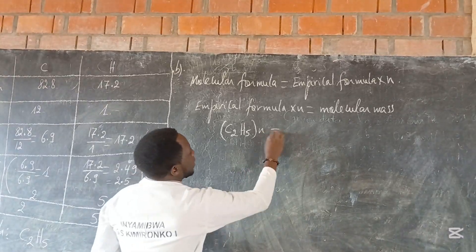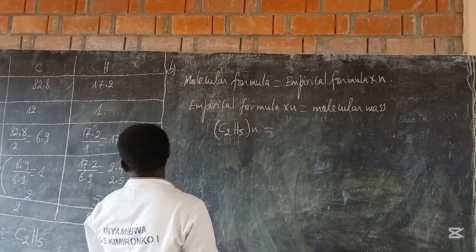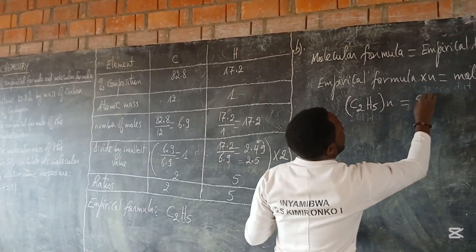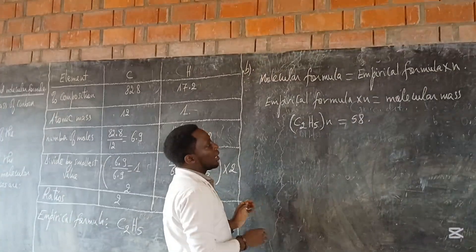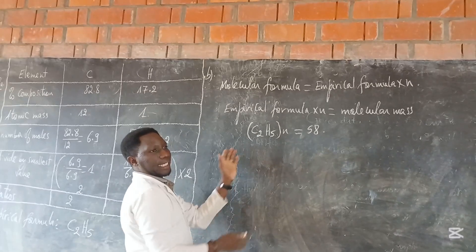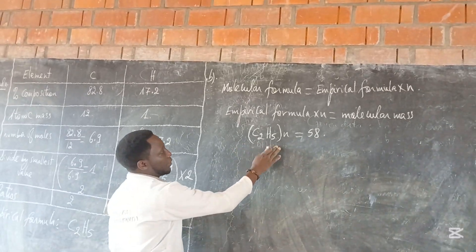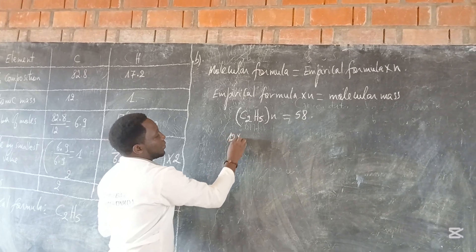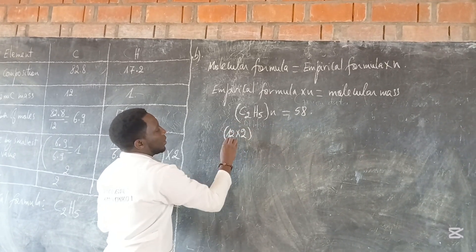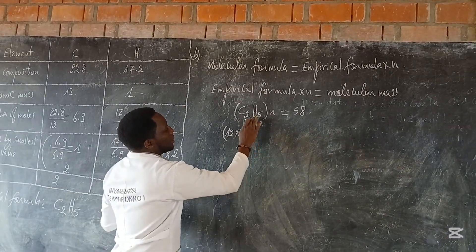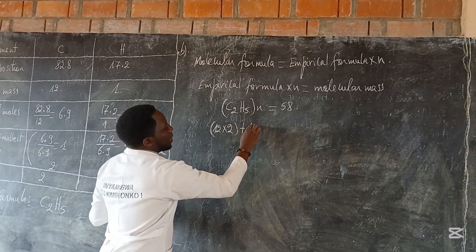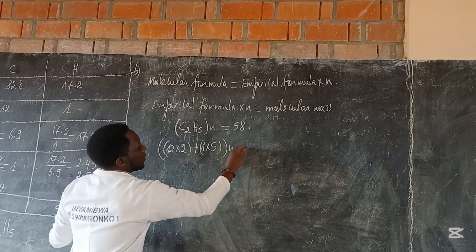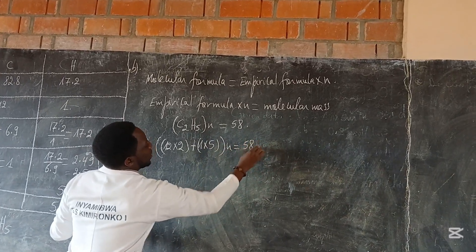This will be equal to the molecular mass. The molecular mass of C₂H₅: the atomic mass of carbon is 12, multiplied by 2, plus the atomic mass of hydrogen which is 1, multiplied by 5, all times N. This is equal to 58.